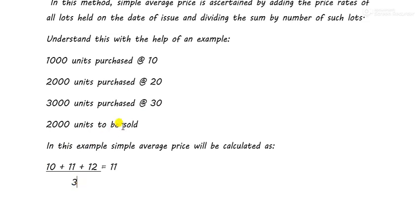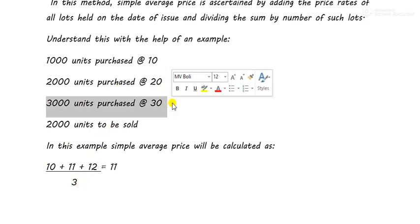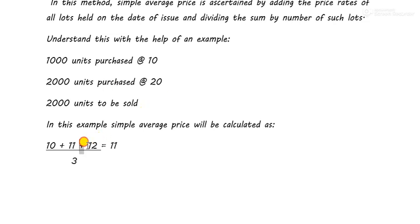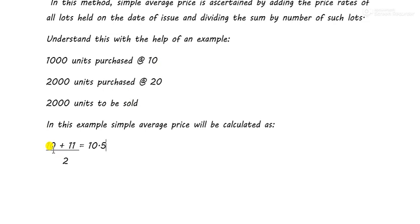Suppose there were only two lots and the third was not there — then we would calculate the rate as 10 + 11 divided by 2, which equals 10.5. So 10.5 would be our issue rate. This is how we calculate rate under the Simple Average Method — it's easier than FIFO and LIFO. We simply add the rates and divide by the number of lots.